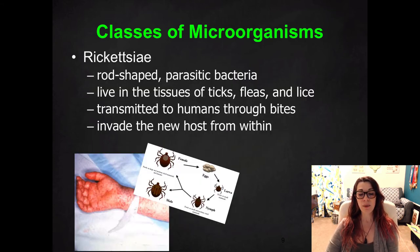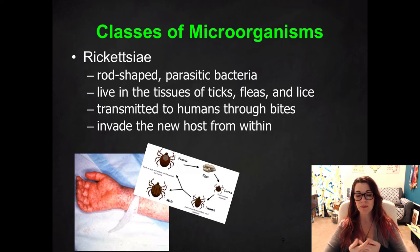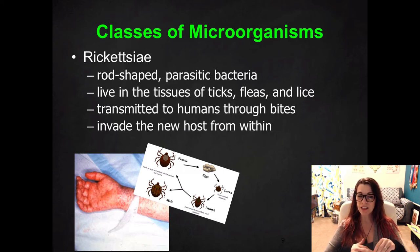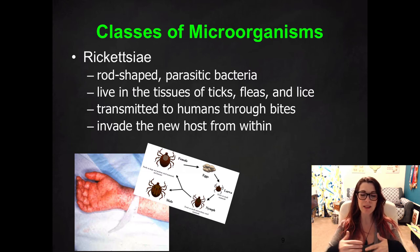Our next category is Rickettsia. Rickettsia are rod-shaped parasitic bacteria — a subcategory of bacteria. They're a little unusual because they live in the tissues of ticks, fleas, and lice. Instead of getting these bacteria from direct exposure, you get them because they're transmitted through bites from these vector animals. The treatment is different, the symptoms are different, and it's harder to diagnose because they tend to be hidden. You know pretty much right away when you have food poisoning, but some of these bacterial infections you don't know about until sometimes the damage has already been done.